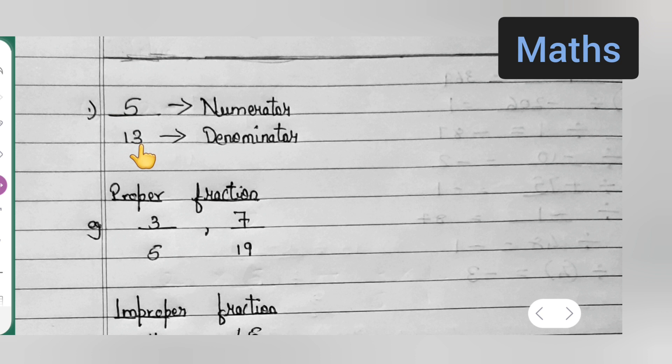Like 5 upon 13, suppose 5 is the numerator and 13 will be the denominator. Let us know what about a proper fraction.